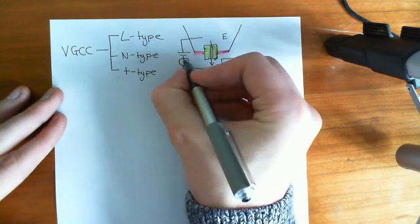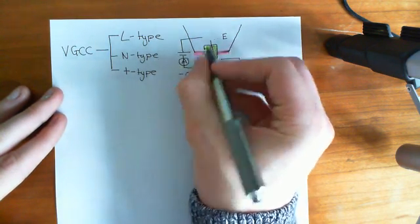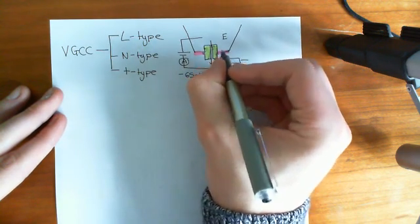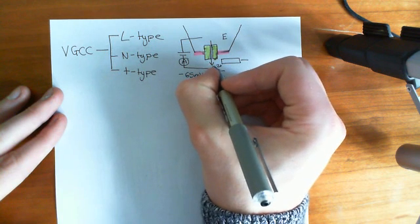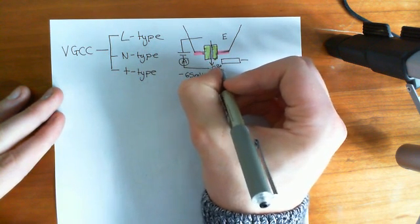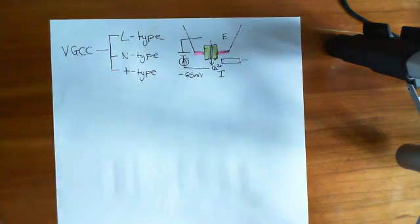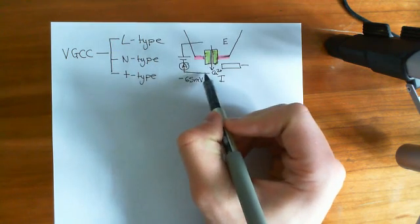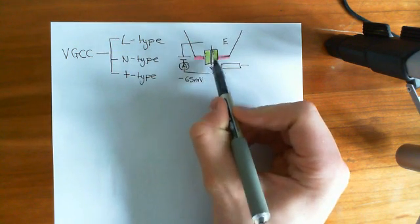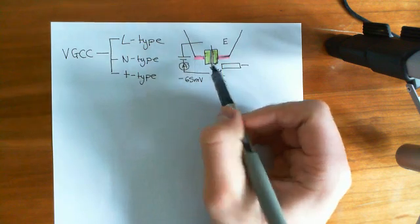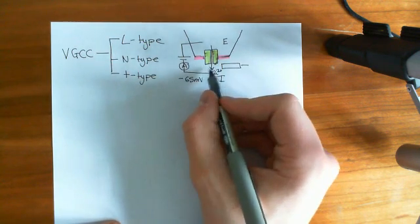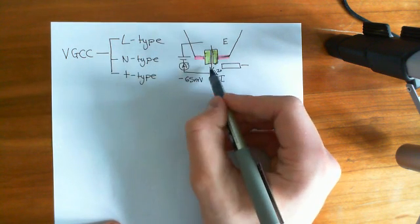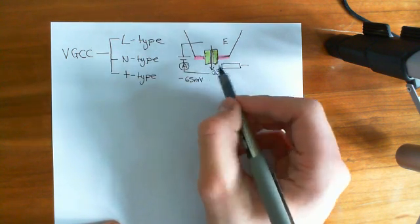If we put an ammeter in the circuit, we can measure the movement of electrons from the extracellular to the intracellular domain. That movement of electrons must match the movement of positive charge in the form of calcium ions. There are two positive charges for every single calcium, so if you move a million electrons, that indicates 500,000 calcium ions moving through. From this current, we can work out the current of calcium going through the channel.